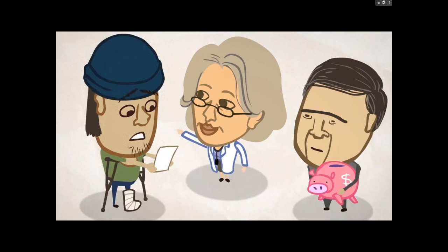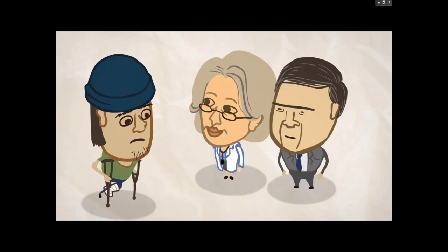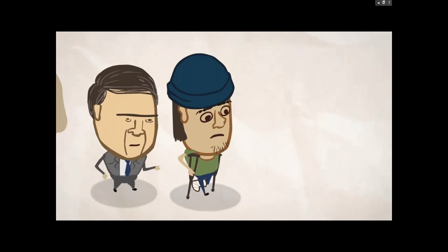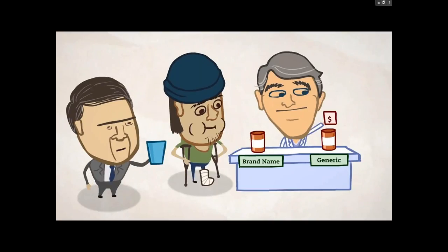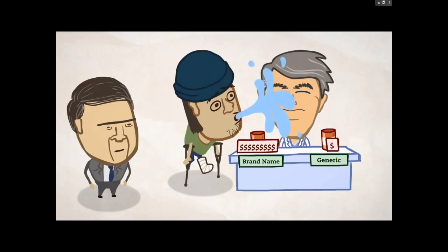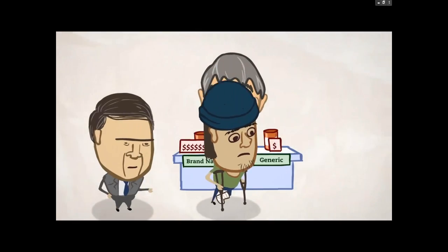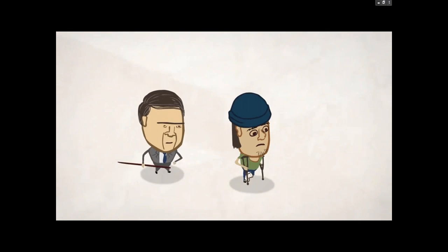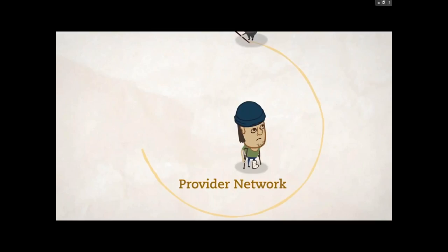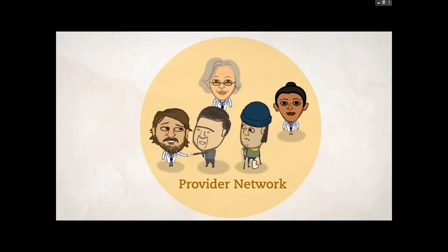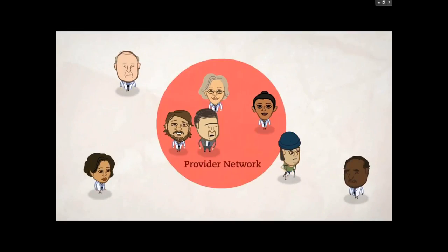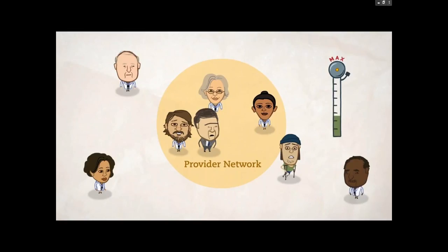It can be just as confusing dealing with prescriptions. The plan has a list of drugs it will pay for, called a formulary, but the prices vary. Check with your doctor or a pharmacist, because a generic drug might work the same as a brand-name drug but the price difference could be huge. Those costs are also affected by your insurance plan's provider network — a list of doctors and hospitals connected to your plan. Insurance companies negotiate discounts with these providers. If you go out of network, you can end up paying full price, and that out-of-pocket limit won't apply.